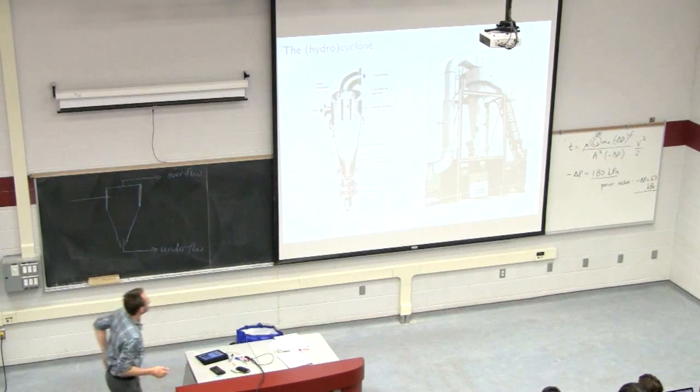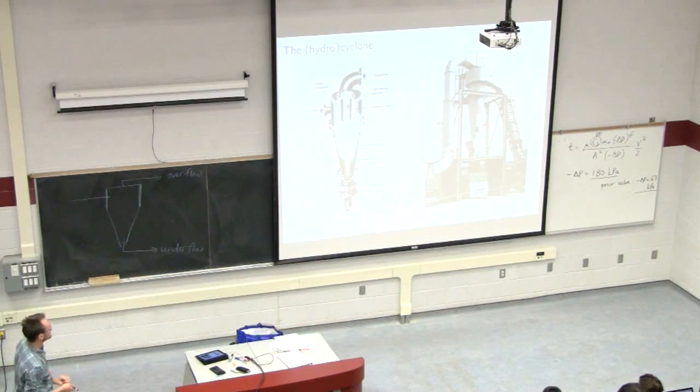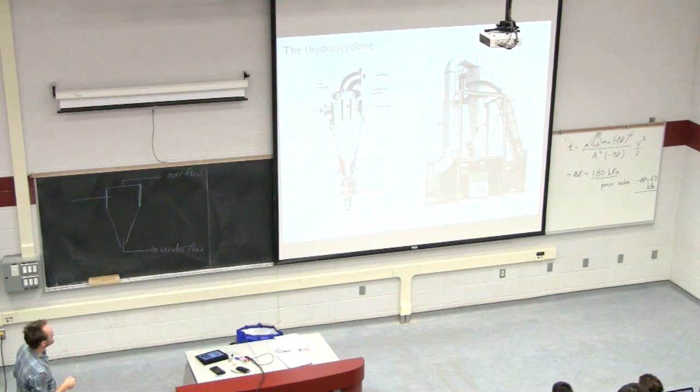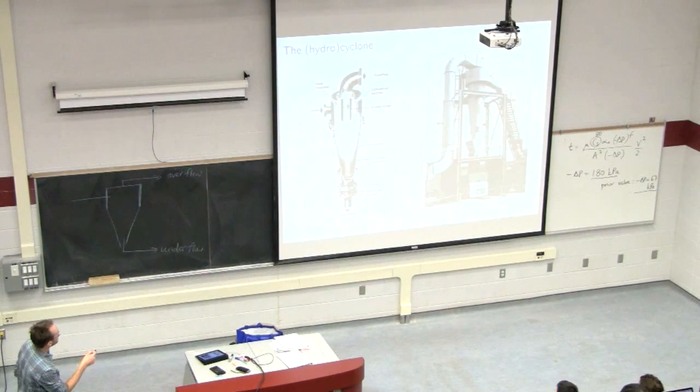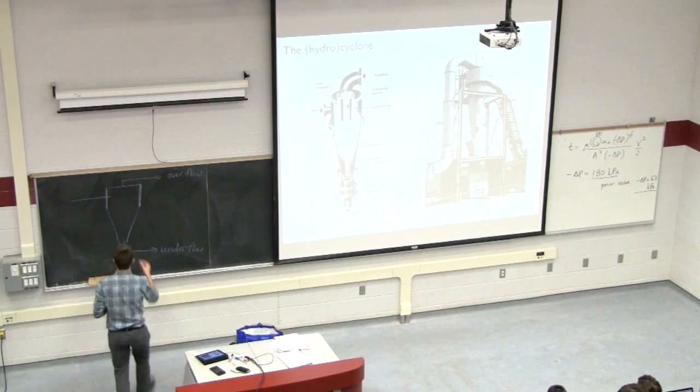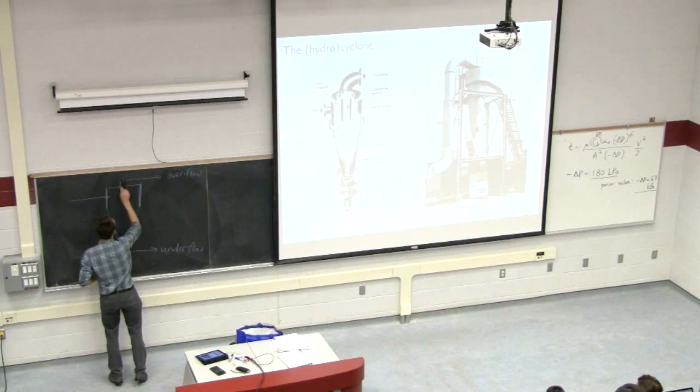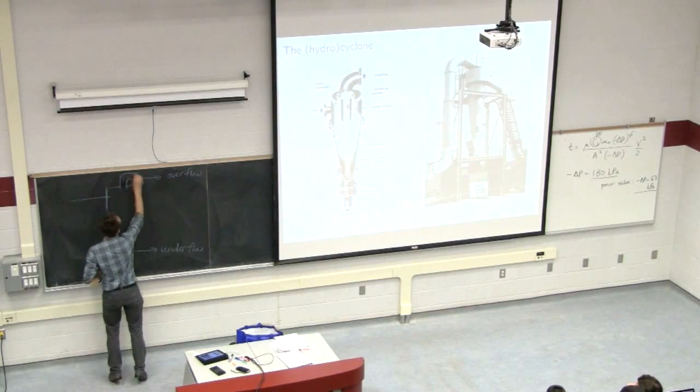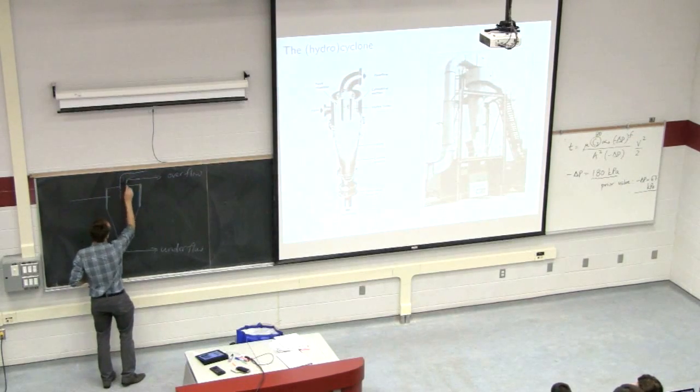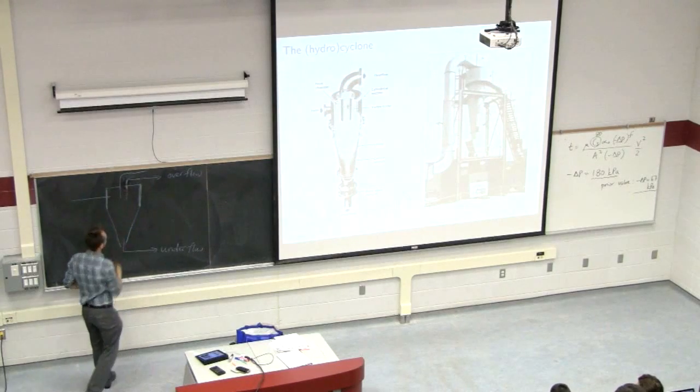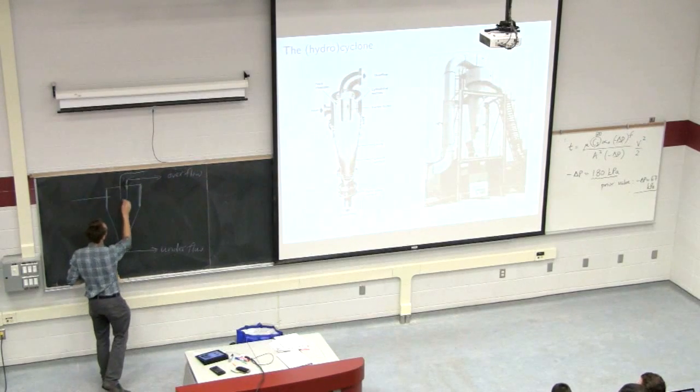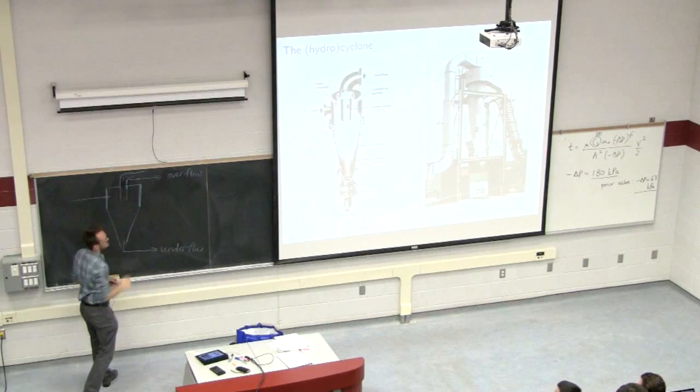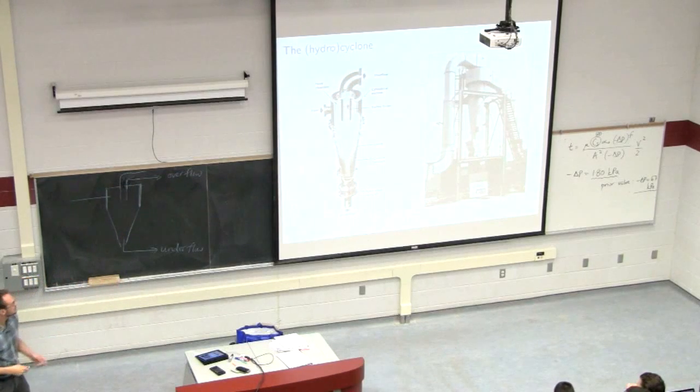So one entry point and two exits. There's internal to the overflow as we follow the overflow inwards. Inside, that pipe keeps going internal to the unit, and this is called the vortex finder. Just that region inside is known as the vortex finder. And you'll see why it's called that in a minute.